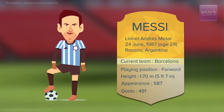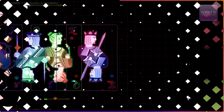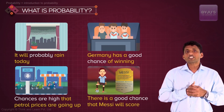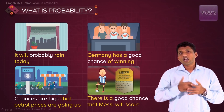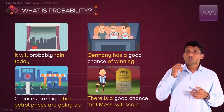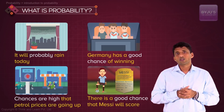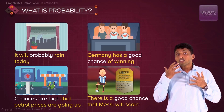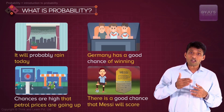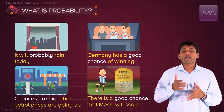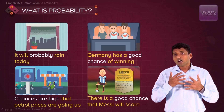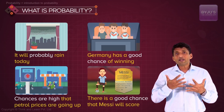Now these words which are getting highlighted here convey the sense that an event is not certain to take place — there is uncertainty about the happening or the occurring of an event. Now, probability...